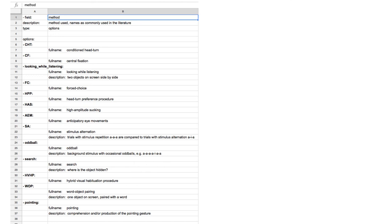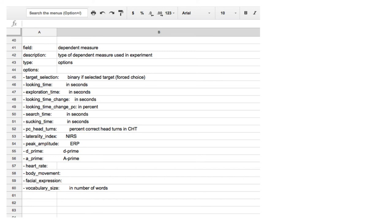Now the dependent measure. Here too there are many options and we tried to create a list of everything we have come across so far. It is again possible to add variables but try to be sure it's really something different from those mentioned here.